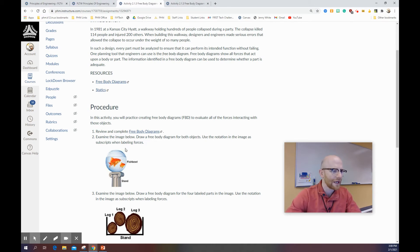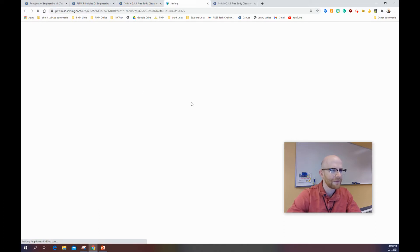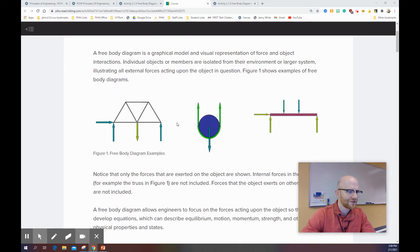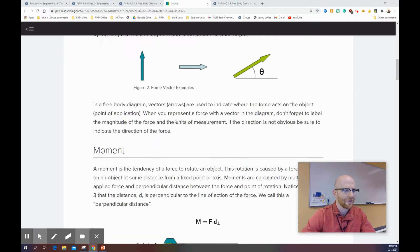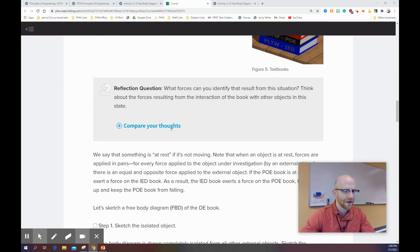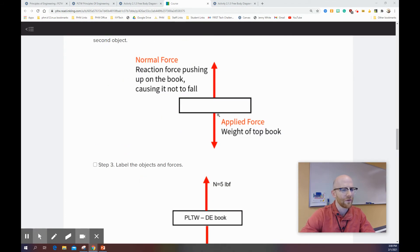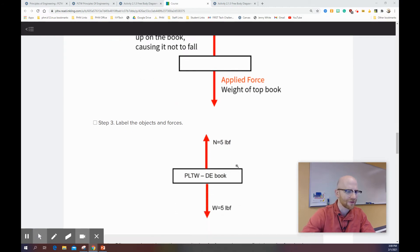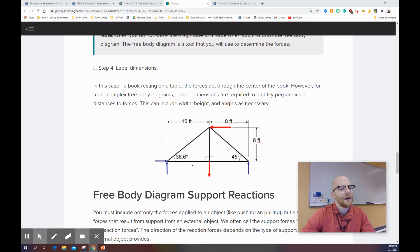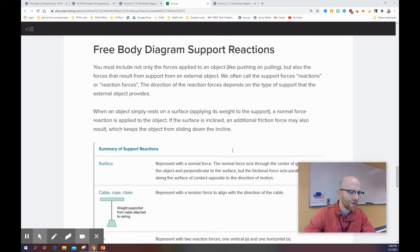When I click right here on the free body diagram, either one of these things, it takes me to the my PLTW as you can see. And it's just kind of like a lesson covering what free body diagrams are. There's something about moment right there. Some of the things that are on there, what the forces will look like. So forces are arrows. There's a normal force. There's the weight.